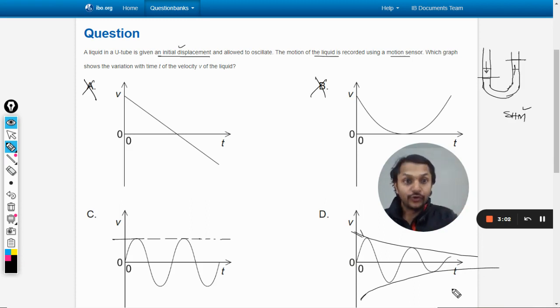...let us say the liquid is not real, it is ideal—there is no friction, there is no viscosity, and we are not including the loss of energy—then the answer will definitely be C. But if we are...